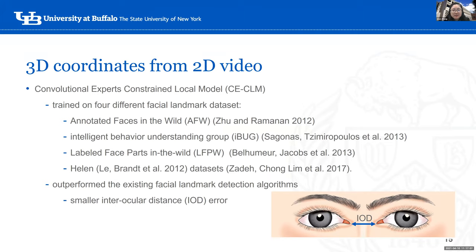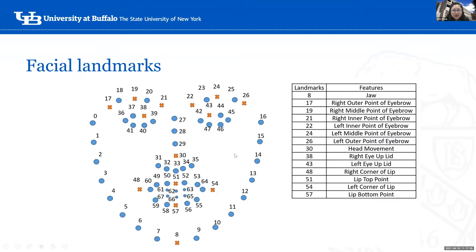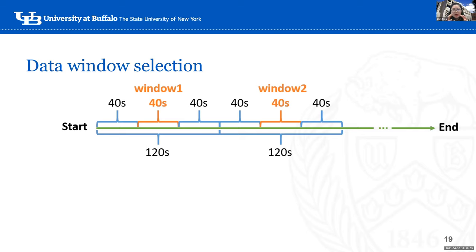To avoid effects of head movement on other landmarks, I first identify head movement and subtract it from each landmark's movement. Facial features selected, shown as orange crosses, are based on literature — related to eyebrow, eye, head movement, mouth, and jaw. Heart rate is normalized as percentage of heart rate reserve. Performance is measured as number of finger movements. A data window selects data in the middle 40 seconds around each RPE report every two minutes to avoid reporting effects.